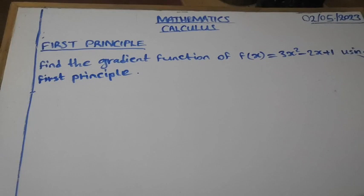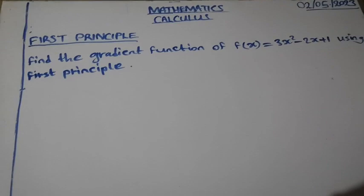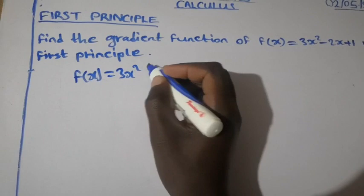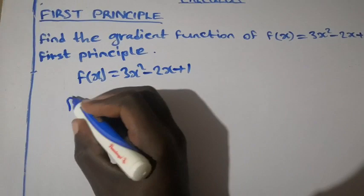Find the gradient function of f(x) = 3x² - 2x + 1 using first principle. So they want us to differentiate this function f(x) = 3x² - 2x + 1 from first principle.